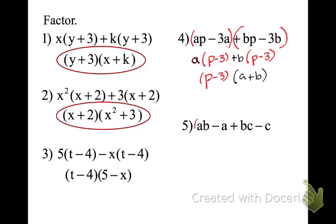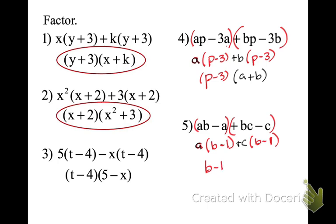Let's try it again — pause the recording and try it. Now let's check our work. Factor out an a: when I divide ab by a, I'm left with just b; when I divide a by a, I'm left with minus 1 — there's a negative there, and a divided by a is 1. In the second binomial, factor out a positive c, and what I'm left with is b minus 1. Now we can pull out the binomial factor b minus 1, and what's left is a plus c.